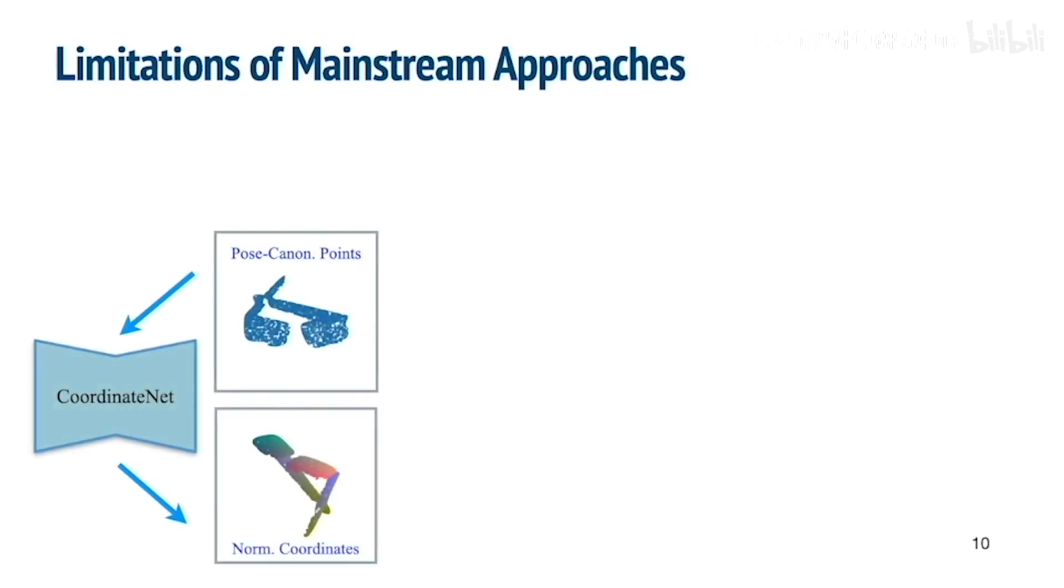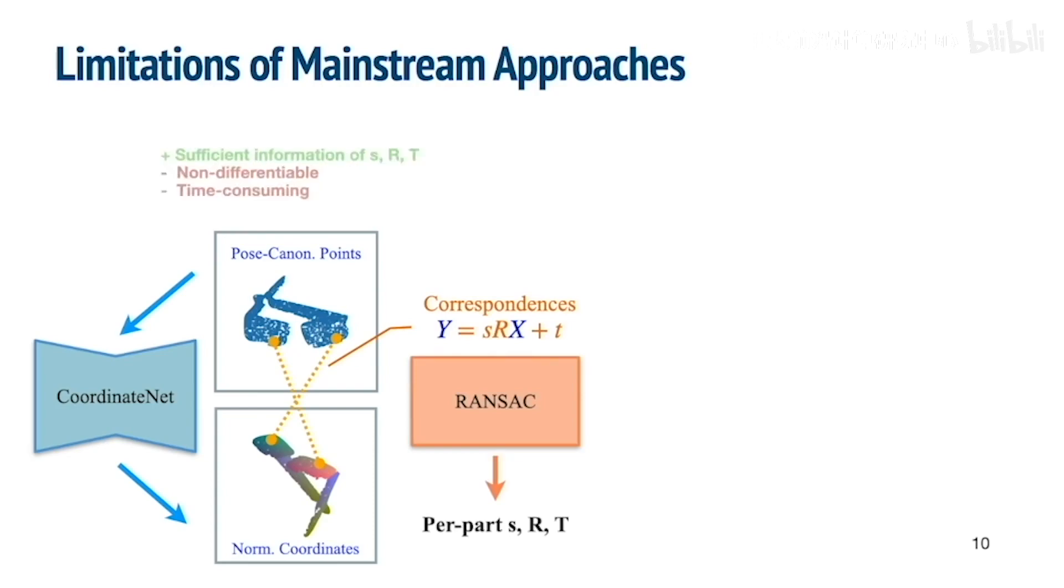Based on the pose-canonicalized point clouds, there are two mainstream approaches to estimate pose, limited in different ways. One common approach is to regress normalized coordinates. Then based on the correspondences, use RANSAC to solve for part poses. This approach captures category-level shape prior and works well under challenging conditions. However, the involved RANSAC step is non-differentiable and time-consuming.